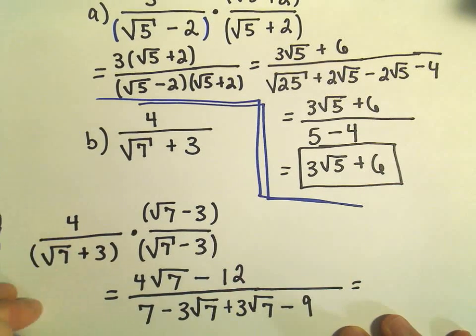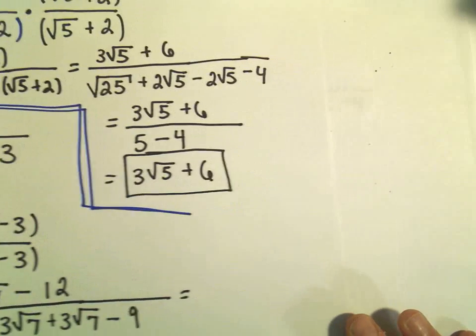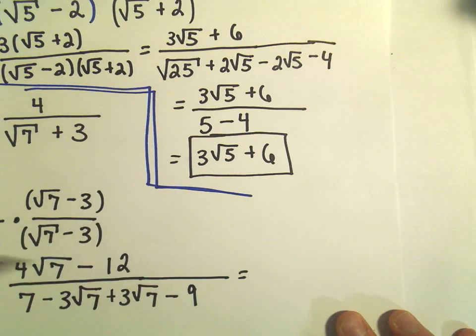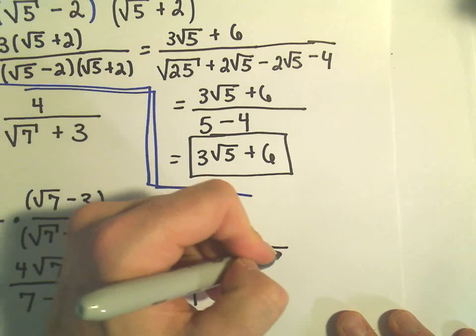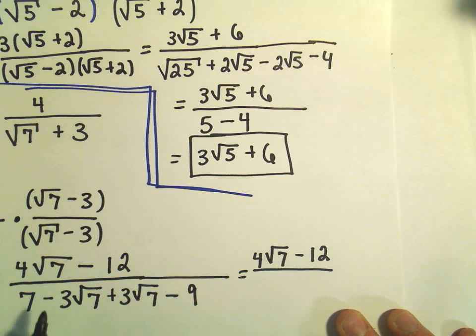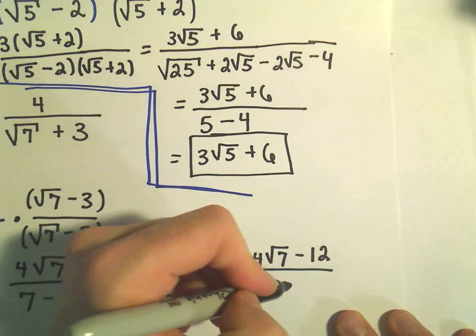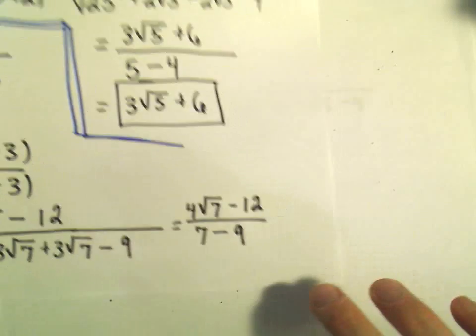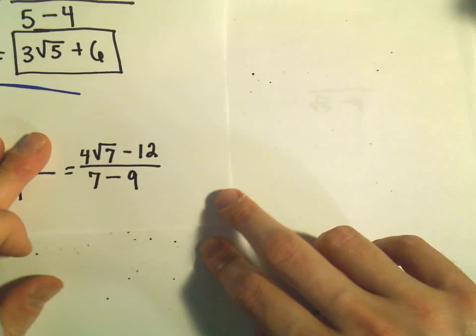So it looks like I think we can do a little bit here. So we'll leave the top part alone, 4 root 7 minus 12. In the denominator, notice again, the negative 3 root 7 and the positive 3 root 7 will cancel. So we'll be left with positive 7 minus 9.